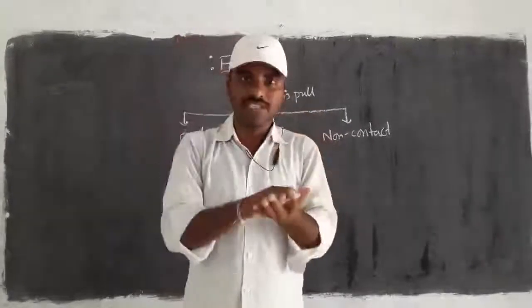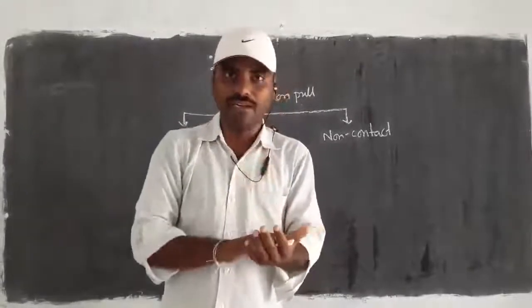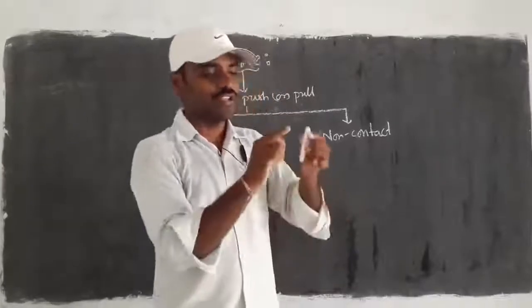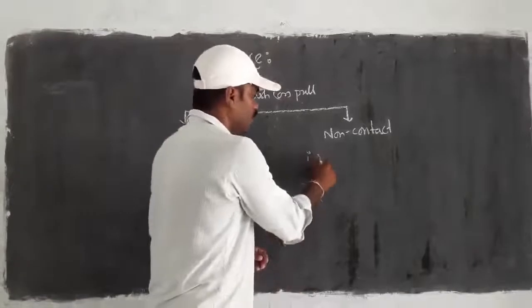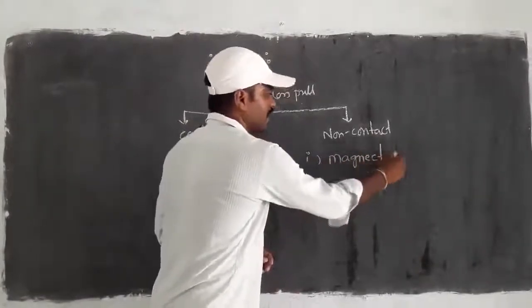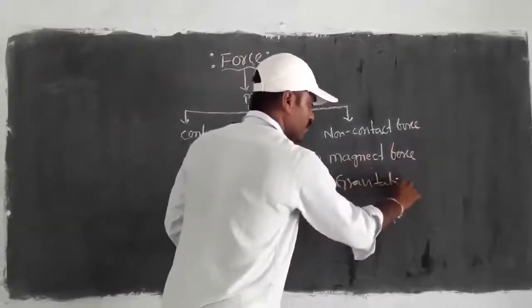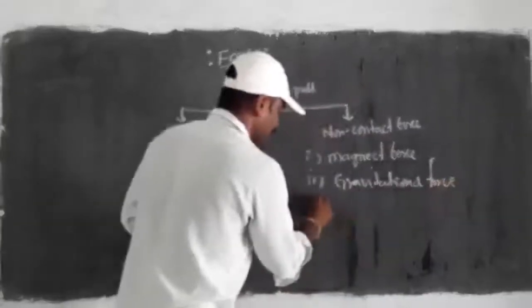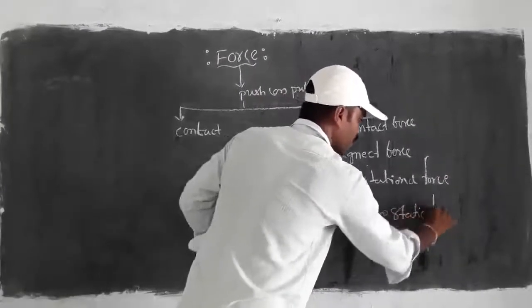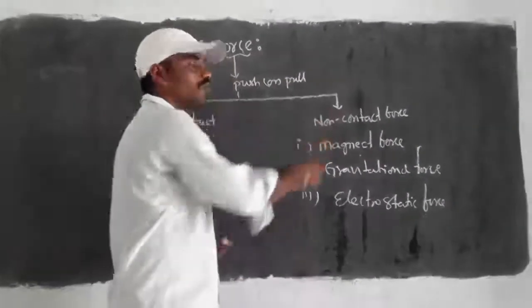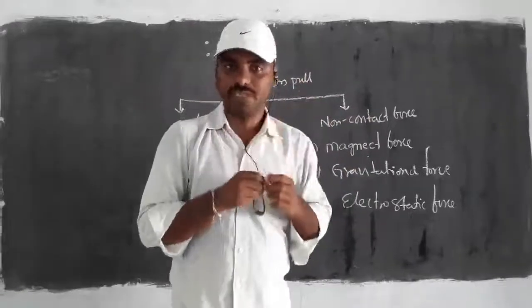The second type is non-contact force. For example, if I push a chalk into the air it comes back down. Any object which is not in direct contact yet still experiences force — we call that non-contact force. Under non-contact force we have different types: gravitational force, magnetic force, and electrostatic force.